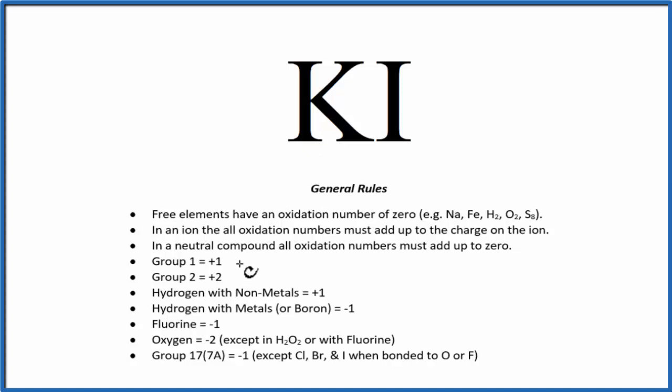Potassium on the periodic table, that's in group 1. So as we look down our rules, group 1, those elements have an oxidation number of plus 1. So the potassium in KI has an oxidation number of plus 1.